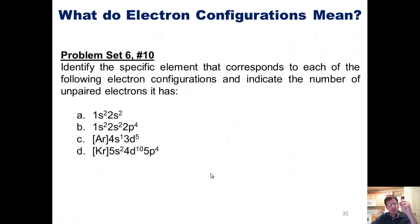So let's do a problem, question number 10 from problem set 6. I want you to identify the specific element that corresponds to each of the following electron configurations, and then indicate the number of unpaired electrons that it has. Now, as I've done in the past, you guys are welcome to pause the video right now, if you wish, and attempt to do these problems on your own before you tune into my answers that are forthcoming. I should warn you, as I have in the past, that I won't give you the answer to every single question, but just a few of them to get you started and allow you to do the rest on your own.